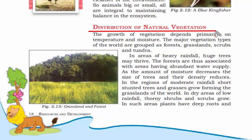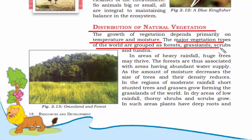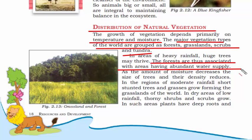The growth of vegetation depends primarily on temperature and moisture. The major vegetation types of the world are forest, grassland, scrubs, and tundra — tundra being the cold region. Wherever you see forest, there will be a lot of water supply and the trees are very huge. The tropical region — the equatorial region at the center of the earth — has tropical evergreen and tropical deciduous forests. As we move towards the temperate zone or north pole, the size of trees decreases because there is less moisture.